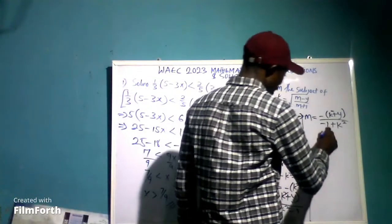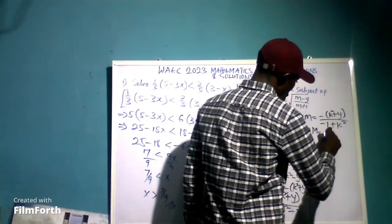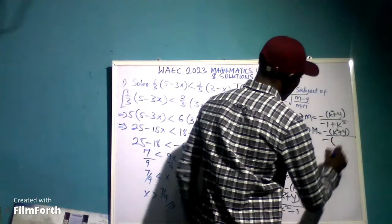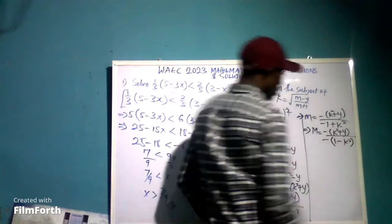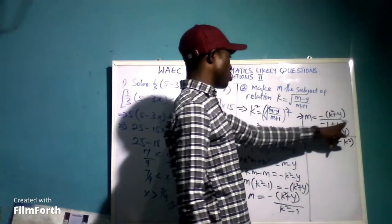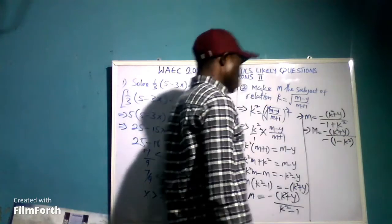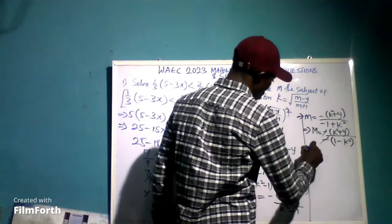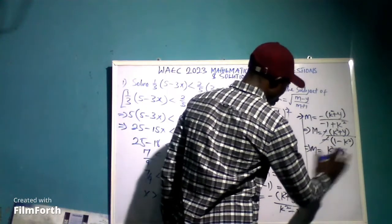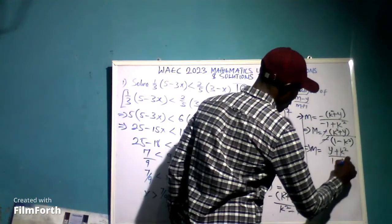Now we can factor out the negative sign into the denominator. Rewriting, we have m equals k squared plus y all over 1 minus k squared. We can verify: minus times 1 gives minus 1, and minus times minus k squared gives plus k squared, which is consistent. So the final answer is m equals k squared plus y all over 1 minus k squared.